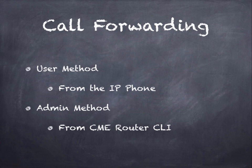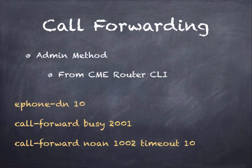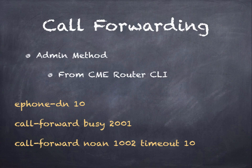Call forwarding. Two methods for forwarding a call: one would be the user method from the phone, pressing the soft key for call forward. Or we can predefine call forwarding conditions from the router CLI as an administrator. For example, with ePhone DN 10, if I wanted calls to be transferred to a different extension when busy, I would type call forward busy, defining that on a busy condition the call should be forwarded to extension 2001. I can also call forward on a no-answer condition, in which case I have to define how many rings quantifies a no-answer — a timeout parameter, in this case 10 rings or 10 seconds, after which the call transfers to extension 1002.